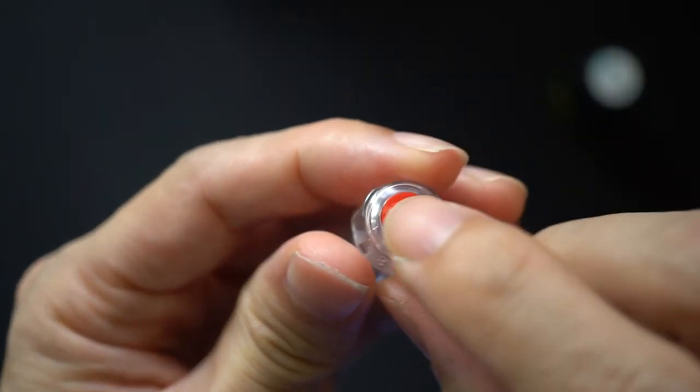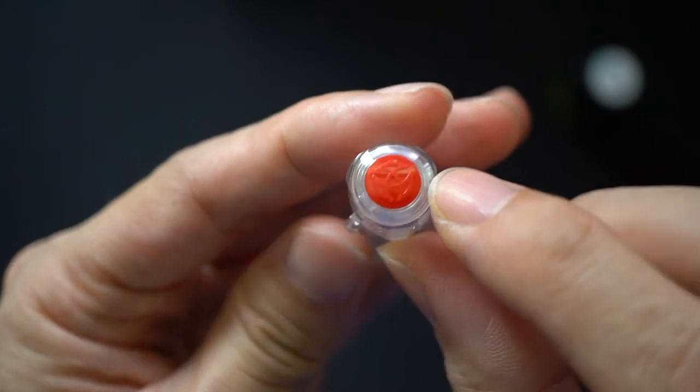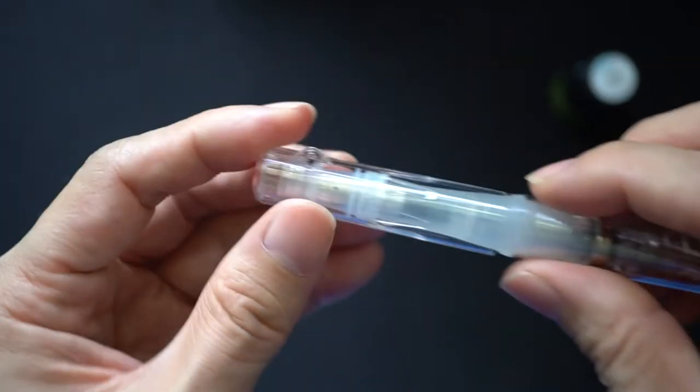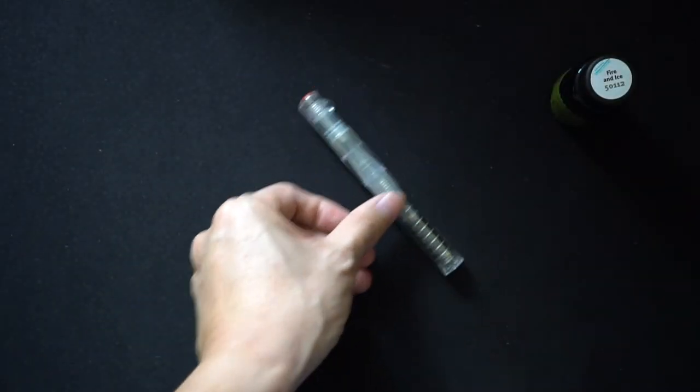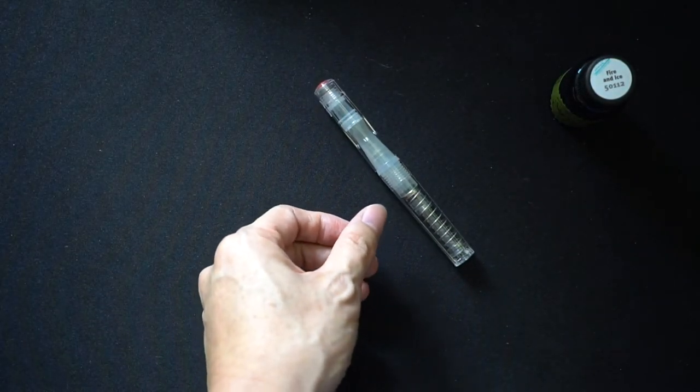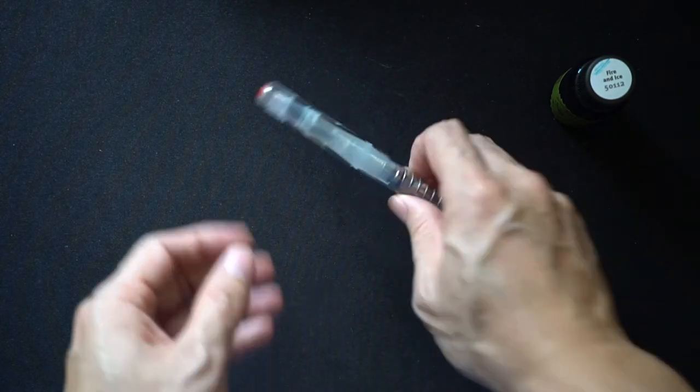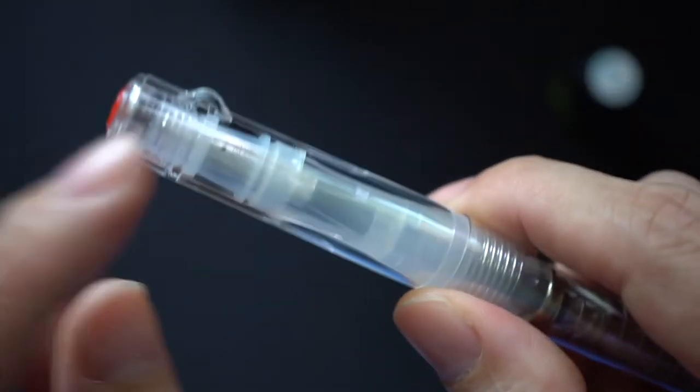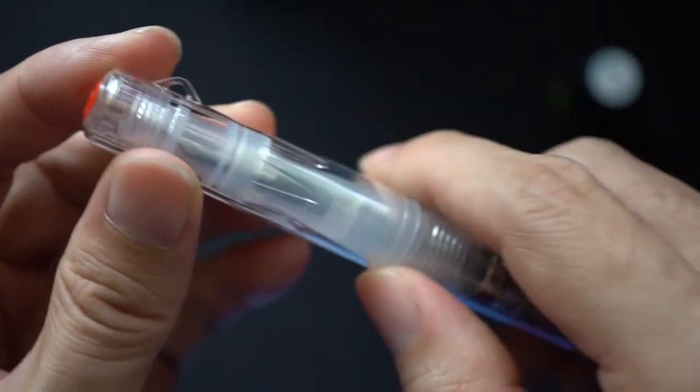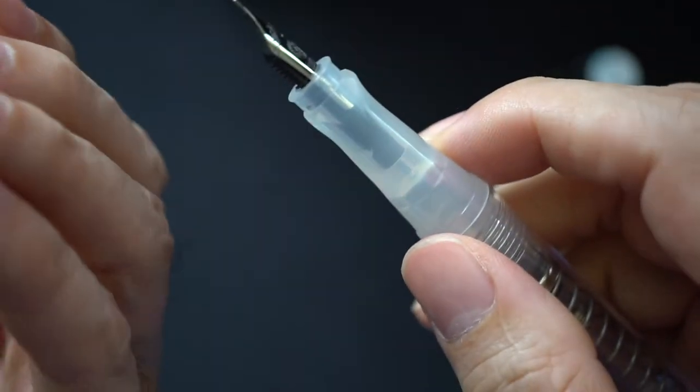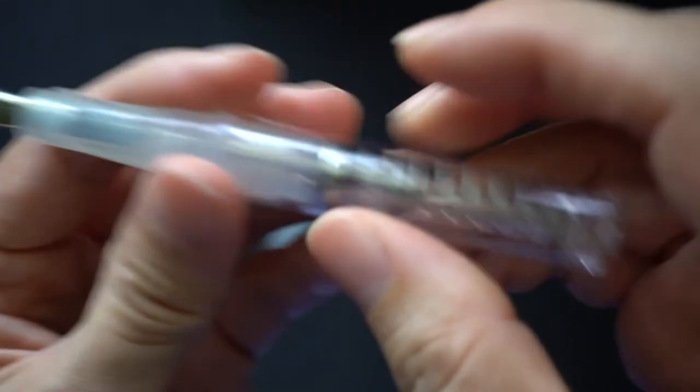In terms of the cap itself, it has the Twisbee logo and a little loop for lanyard, which helps as well. If you're one of those that are always concerned about the pen rolling off the table, you needn't be worried because of this little hook down here. And that's the cap.